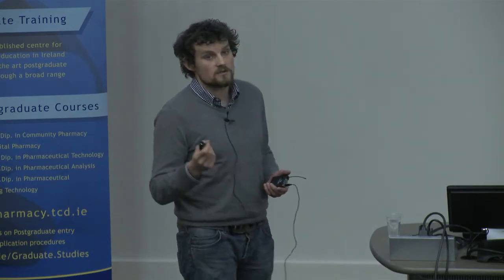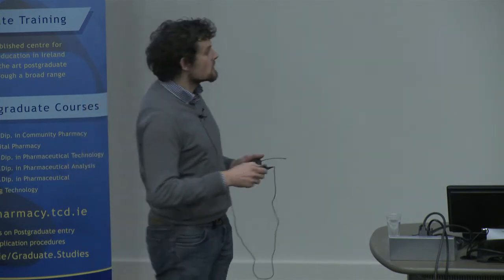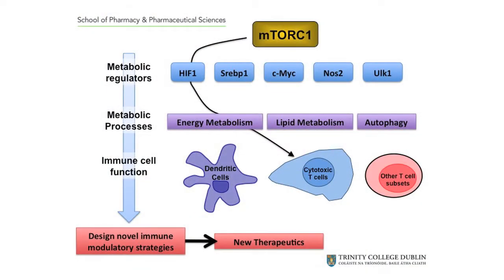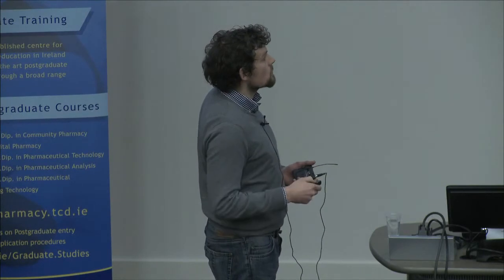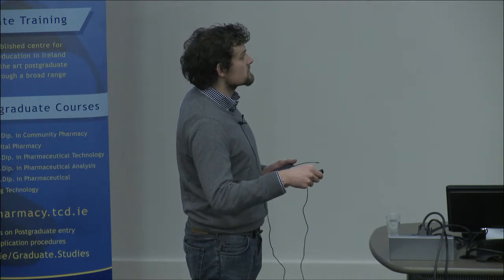We investigate how mTORC1-controlled metabolism links to the function of key immune effector T-cells. We have characterized one such mTORC1-dependent relationship involving a protein called HIF1 that links glucose metabolism to the function of cytotoxic T-cells — a key T-cell subset involved in killing virally infected cells and tumor cells. If you disrupt either mTORC1 or HIF1 in these cells, they are no longer able to sustain high levels of glucose metabolism and can no longer maintain the tools required to migrate and kill their target cells.